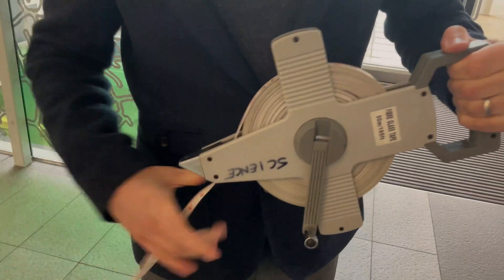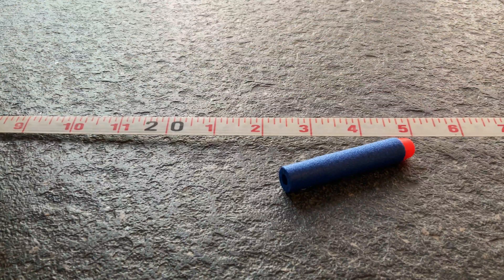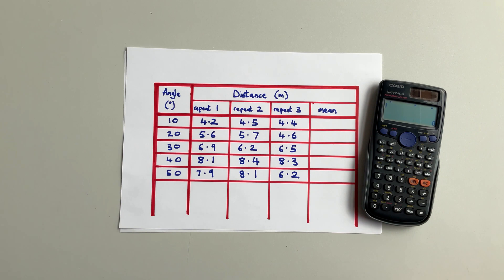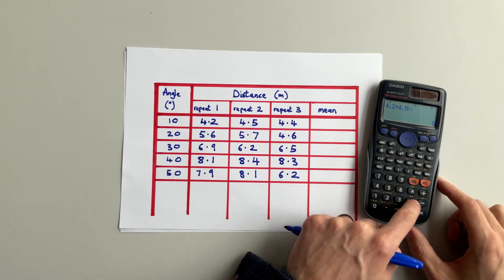Our second example is a very serious experiment. Firing a Nerf gun at different angles and seeing how far the bullets go. Here's my results table for that experiment. I'm going to start by calculating the mean for when the angle was 10 degrees. There were three values there, 4.2, 4.5 and 4.4.